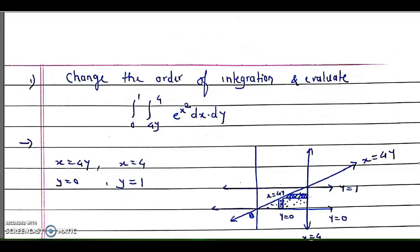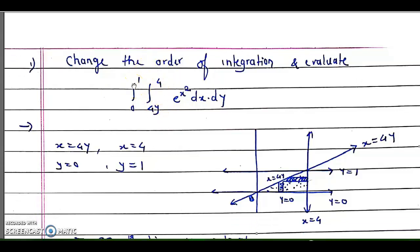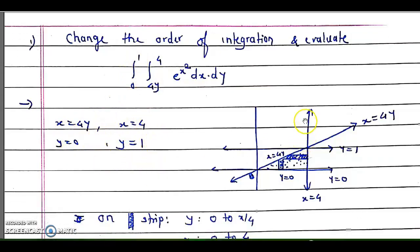Consider the example: change the order of integration and evaluate the integral from 0 to 1, 4y to 4, of e^(x²) dx dy. Inner integral limits are functions of y, so they must be the limits of x. Therefore these four limits are nothing but four curves: x = 4y, x = 4, y = 0, and y = 1. If we draw them, we get a figure where the dotted area is our region of integration. The order of integration given is first x then y, meaning a horizontal strip has been considered.